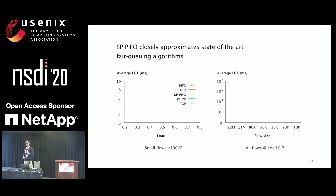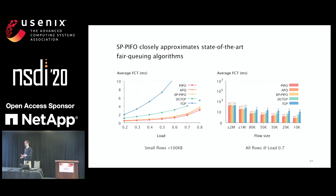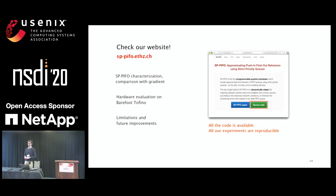For fair queuing, we implement the fair-queuing ranking algorithm and compare to the ideal PIFO implementation and the state-of-the-art approximated fair queuing. SP-PIFO approximates the ideal case quite closely and is very close to the state-of-the-art. The website includes extended hardware evaluation, discussion of future steps, limitations of the proposal, and all code is publicly available with fully reproducible experiments.